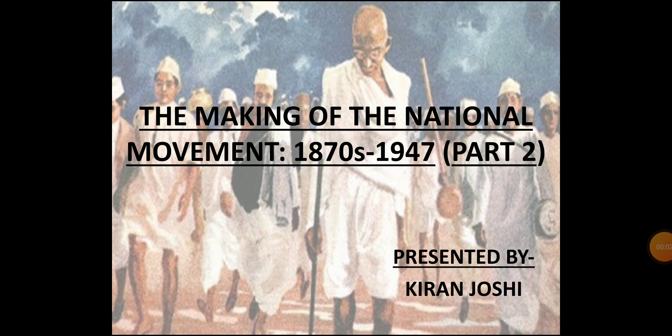Hello everyone, I am Kiran Joshi. Hope you all are fit and fine. This is the second video of Class 8 History Chapter: The Making of the National Movement, 1870s to 1947. In the first video, we learnt that during the 1870s and 1880s, many political organizations were formed, among which the Indian National Congress was the prominent one. These organizations tried to develop the feeling of nationalism among people and raise voice against the British rule. We learnt about the various demands of the Indian National Congress from the British government, about the partition of Bengal and the Swadeshi movement, about moderates and extremists, and about the formation of the All India Muslim League.